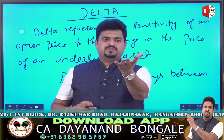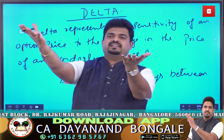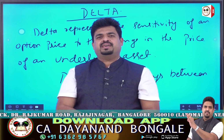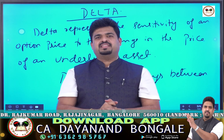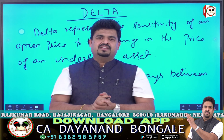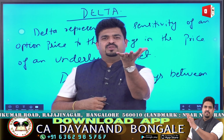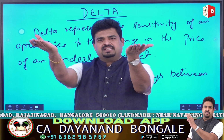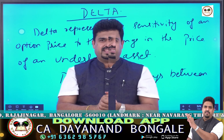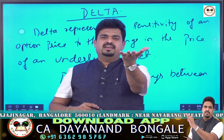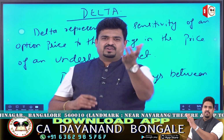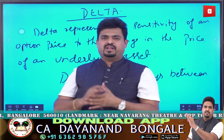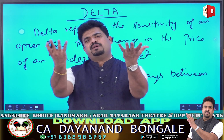The price of the option premium changes relative to the underlying asset. If the selling price of the premium is 100, and you assume you are at the money at 17,500, the premium is 100. If you are buying at 100, that is the option premium.